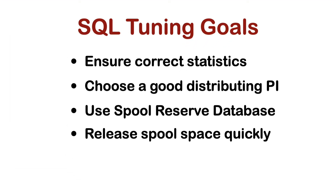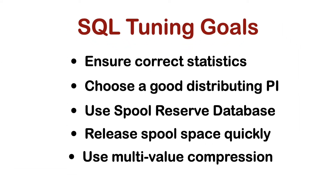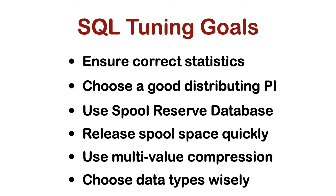Release spool space as soon as possible. Drop volatile tables immediately when they are no longer needed. Often you rely on this to happen automatically at the end of the session — don't do it. Not dropping volatile tables immediately unnecessarily blocks spool space and cylinders that Teradata could use as permanent space. Use multi-value compression: it allows the optimizer to keep data blocks compressed in main memory, making it a suitable tool to reduce required spool space, especially for large tables with few different values in a column. Use appropriate data types: a byte integer column should not be defined as an integer, as that requires four times as much space in spool. Similarly, use variable character columns instead of fixed character columns to save spool space.